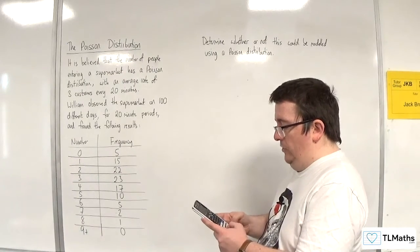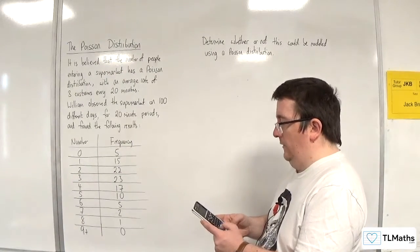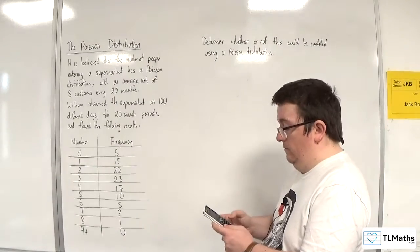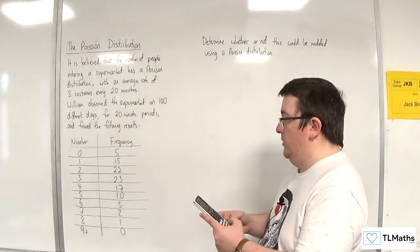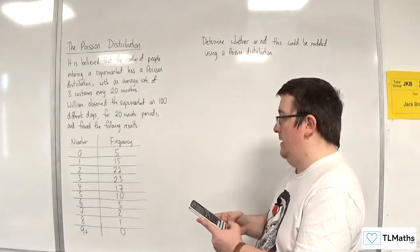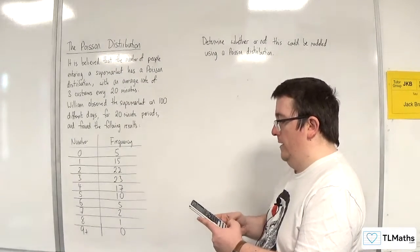Entering the data: number of customers 0, 1, 2, 3, 4, 5, 6, 7, 8, and 9, with corresponding frequencies 5, 15, 22, 23, 17, 10, 5, 2, 1, and 0.